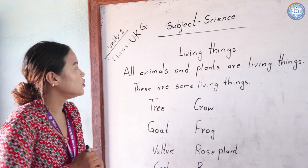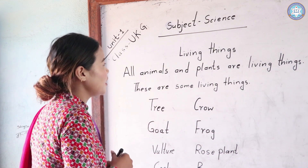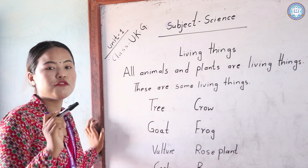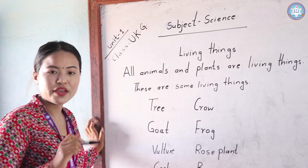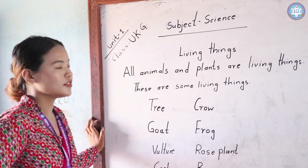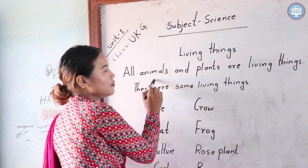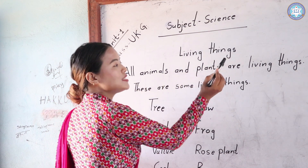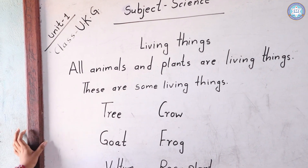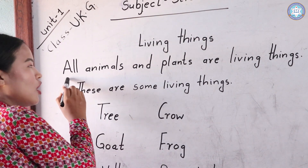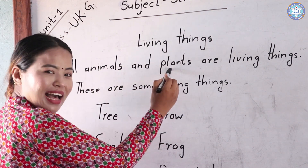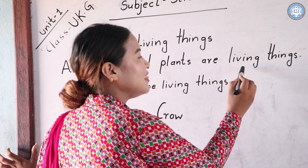Today we are going to learn about living things and non-living things. First, we have learned about living things. All animals and plants are living things. Okay, now your turn — repeat this: all animals and plants are living things.